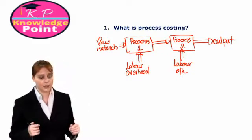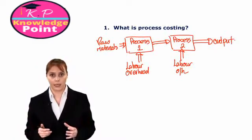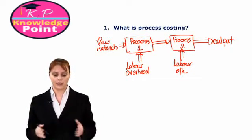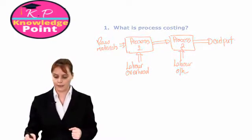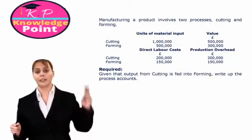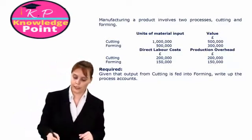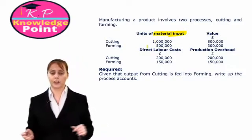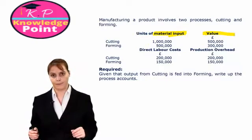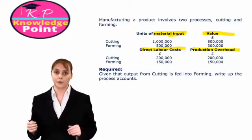Before we get into those complications, first we want to see and understand what process accounts look like. We are going to go through an exercise that shows us how we process our information in our process accounts. This manufacturing company has two different processes — cutting and forming — and we are told for each process the materials input, their value, and the direct labour and production overhead costs.